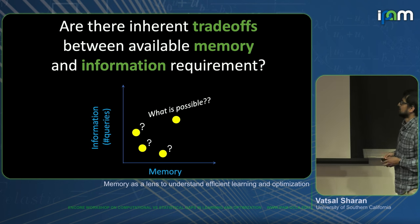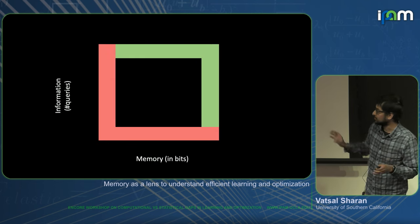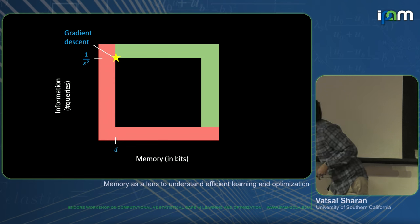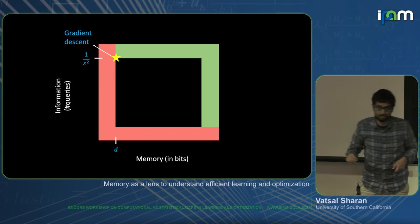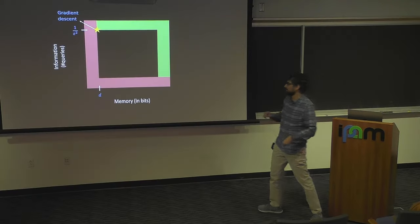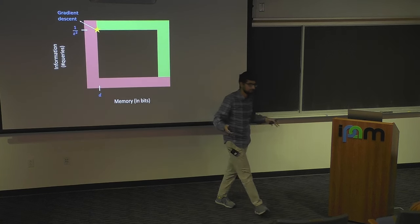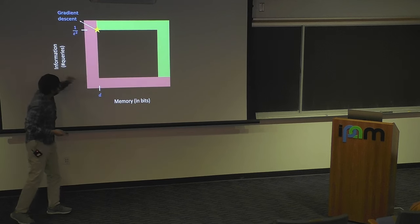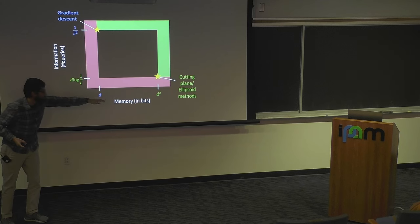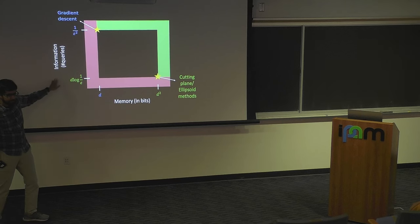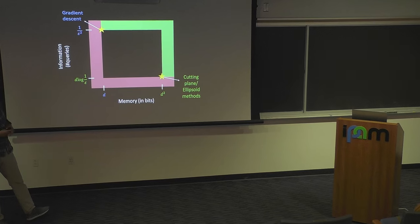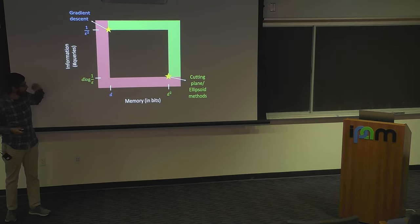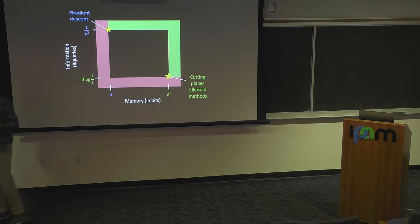Let's plot our different algorithms to understand the setup. On one hand, gradient descent uses only d memory and takes 1/ε² queries to find an epsilon-optimal solution. d memory is also information-theoretically necessary — solving a d-dimensional optimization problem requires at least d memory to store the answer. Then we have the cutting-plane and ellipsoid methods: they take d-squared memory but get a better query complexity of d log(1/ε) queries. This query complexity is known to be optimal — information-theoretically you cannot do better.